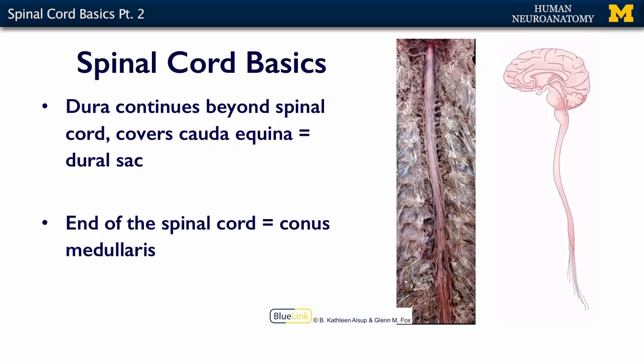Within the spinal cord and the vertebral column, the dura is a little bit different than it is in the brain. Around the brain, the dura acts as periosteum, forming a meningeal layer right up against the bone, with basically no space between the brain and the bone except for the subarachnoid space — it's very tight. Within the spinal column, the vertebrae bend a little bit; there's flexibility because it's not one solid bony structure. So with regard to the dura in the vertebral column itself, there is a space.